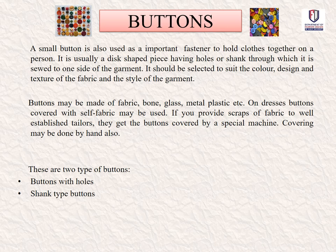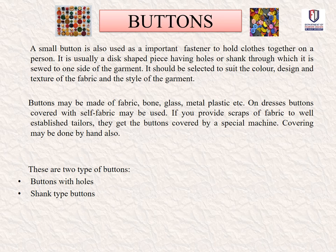Next is buttons. A button is an important fastener used to hold clothes together. It is usually a disc-shaped piece having holes or a shank, through which it is sewn to one side of the garment. It should be selected to suit the color, design, texture, fabric, and style of the garment. Buttons may be made of fabric, bone, glass, metal, plastic, etc. On dresses, buttons may be covered with self fabric or made of thread. If you provide scraps of fabric to a tailor, they can get buttons covered by a special machine — these are known as fabric buttons. The two main types of buttons are buttons with holes and shank-type buttons.